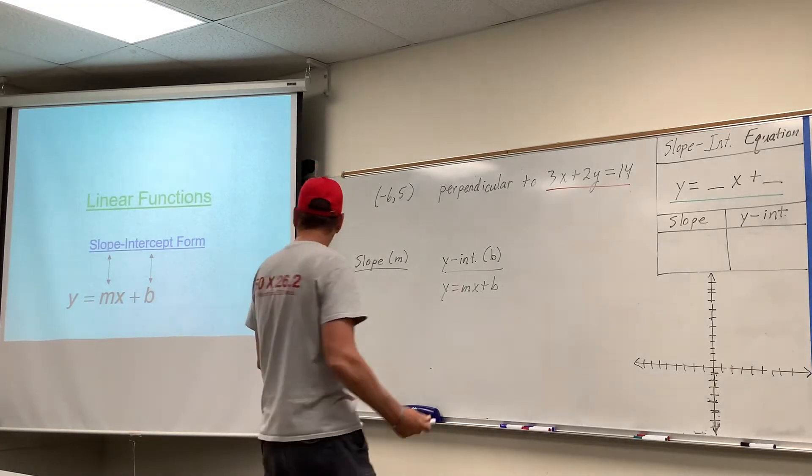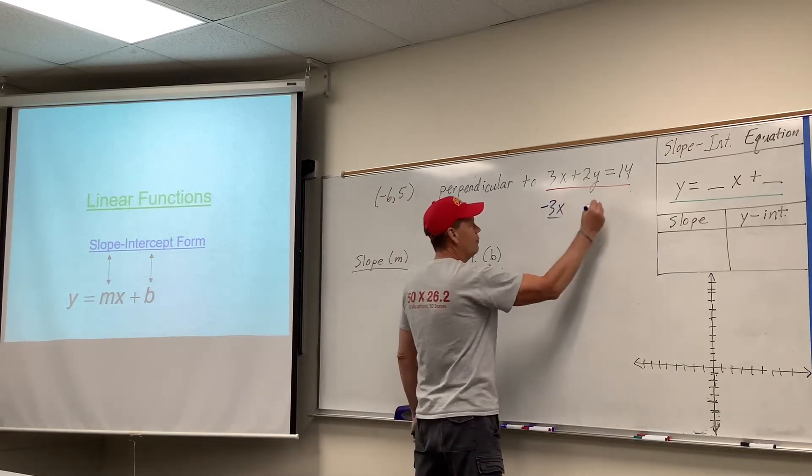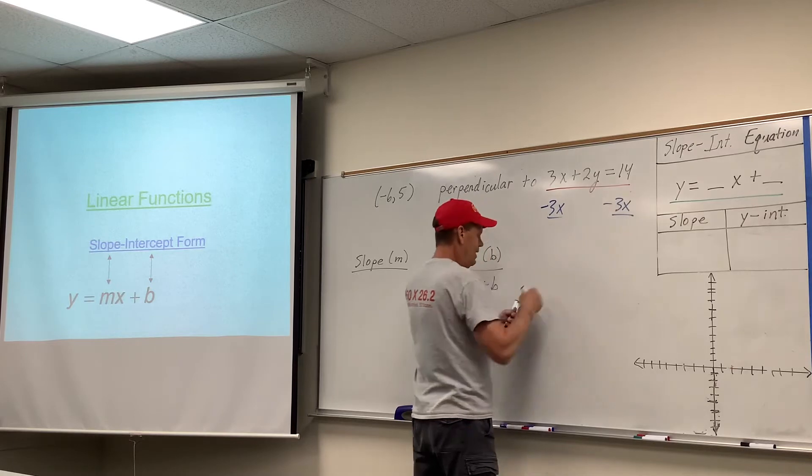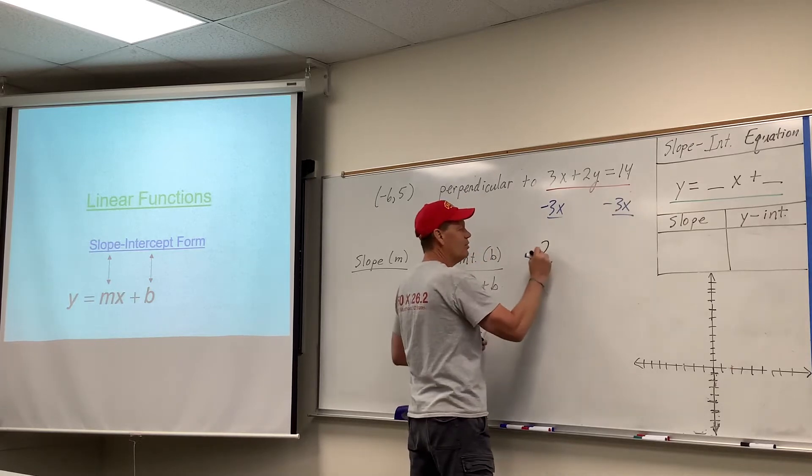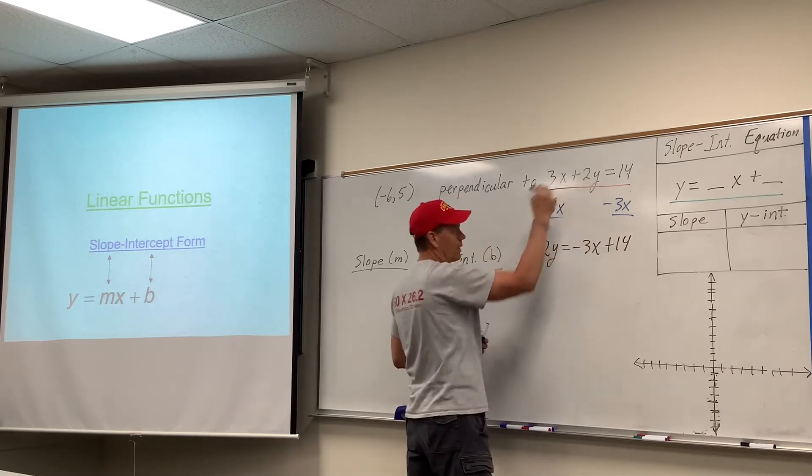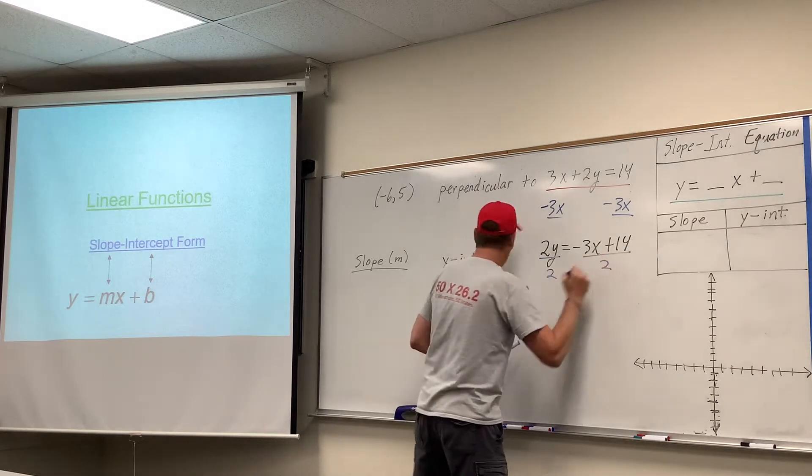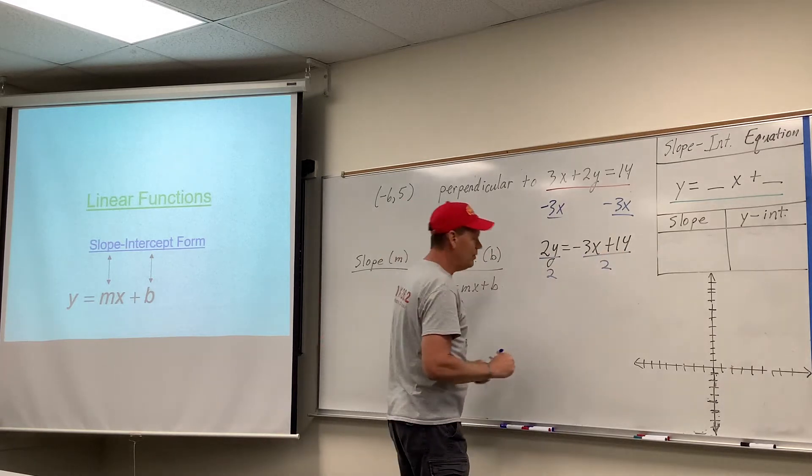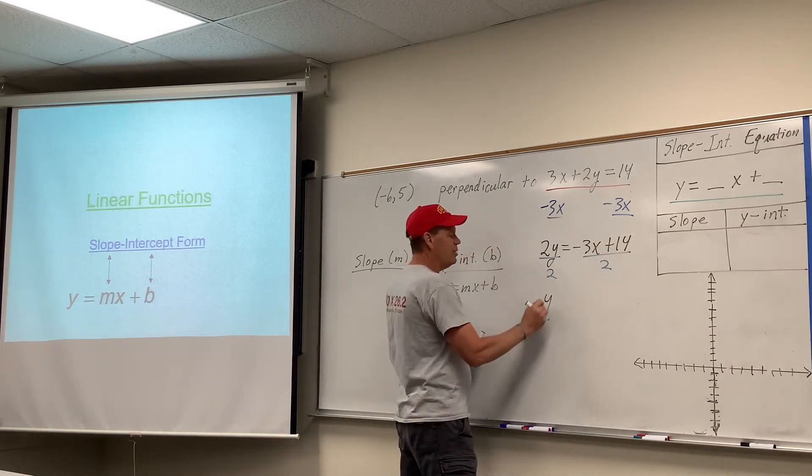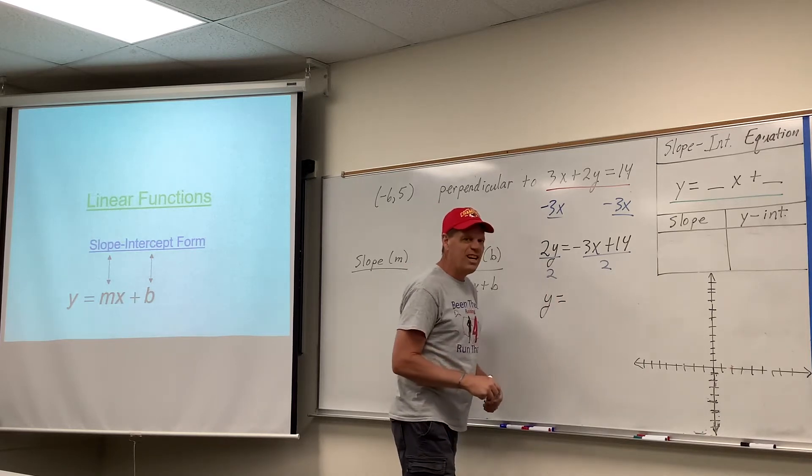So we need to get y by itself. And so the steps would be to subtract over the 3x. This is very similar, if you need to go back and review, I believe it was example number two, where we took an equation of that type.